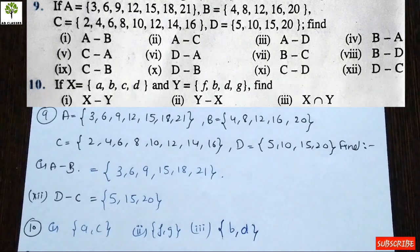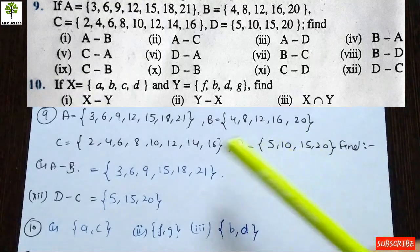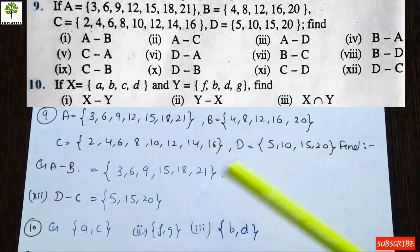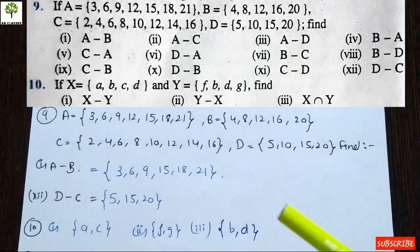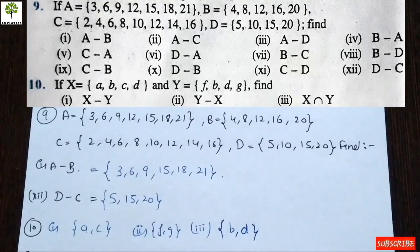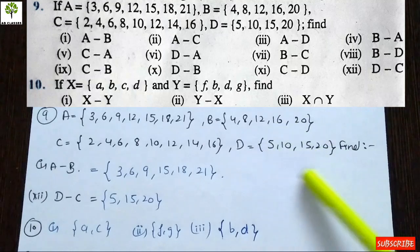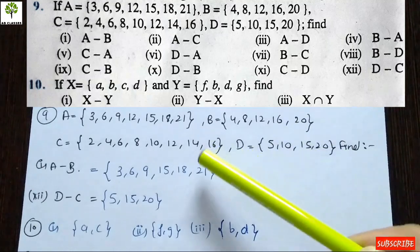For D minus C, we subtract C's elements from D. This does not mean the answer will be negative like in normal arithmetic where subtracting a larger number from a smaller one gives a negative result. Here set D is the smaller set, but set subtraction works differently.